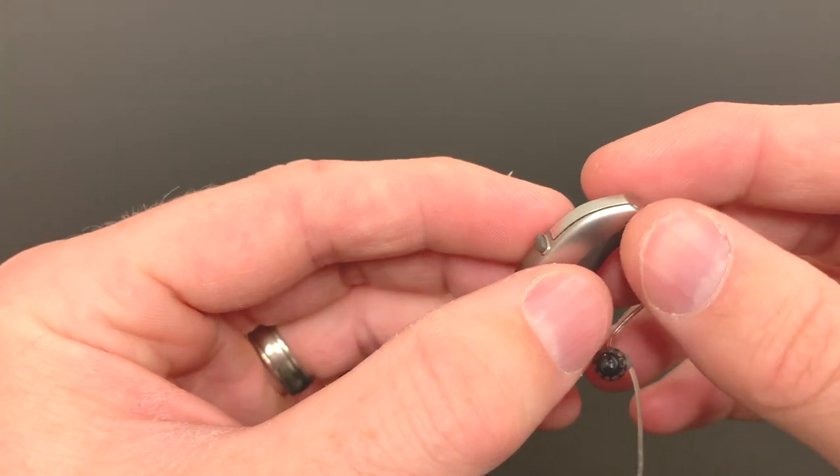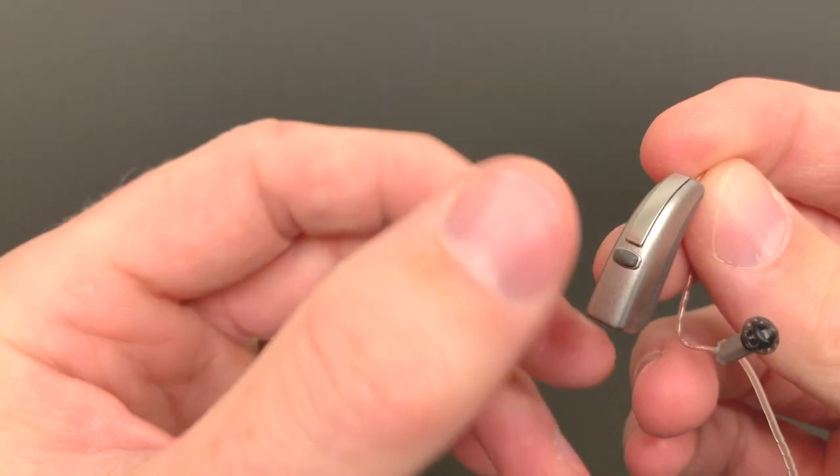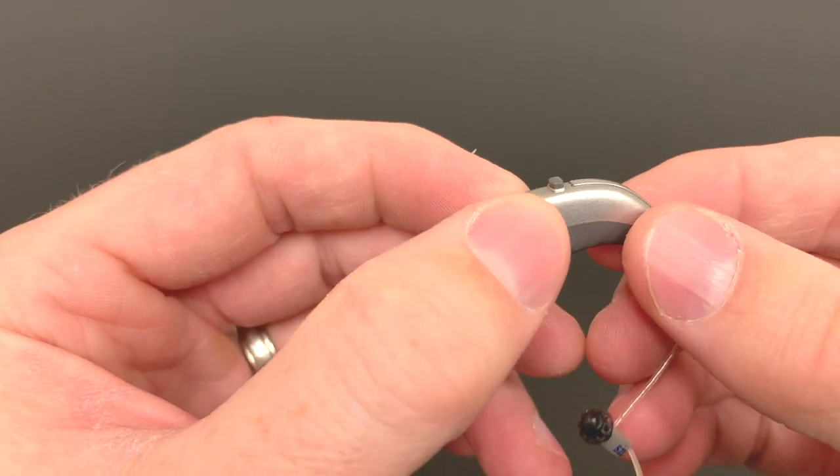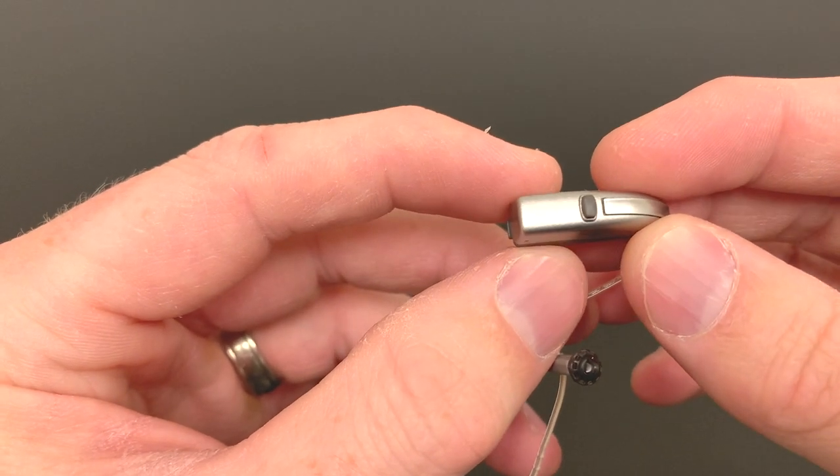Let's start on the back of the hearing aid. In most of these, you have a program button right back here that can be used to set various settings with the hearing aids, including volume control and program changes.